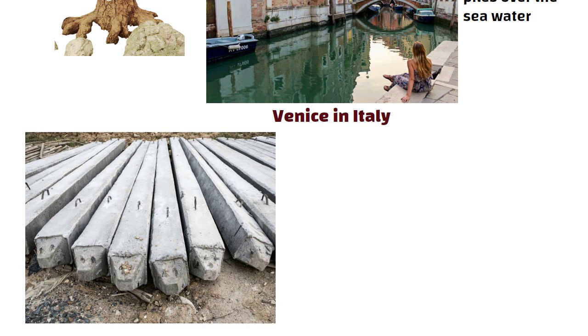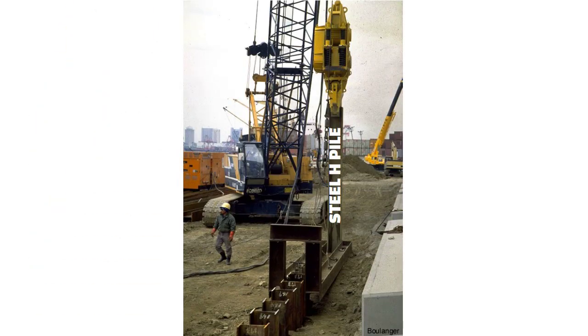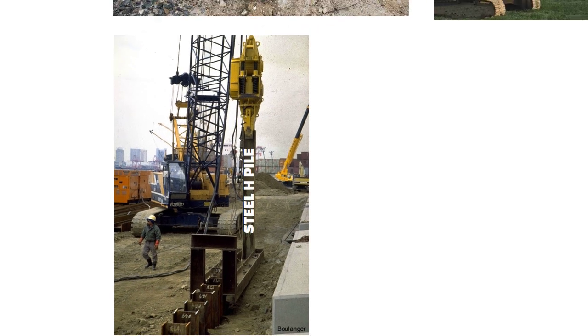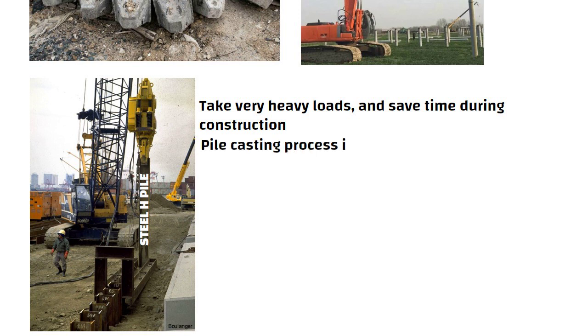Concrete piles are precast, that is made at ground level and then driven into the ground by hammering. Steel H piles can also be driven into the ground. This can take very heavy loads and save time during construction as the pile casting process is eliminated.